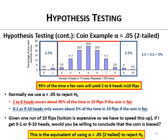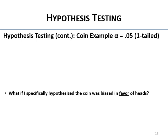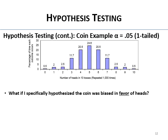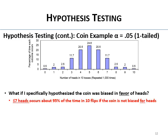How about alpha 0.05 one-tailed? My hypothesis would have to be different — I'd have to say this coin is biased in favor of heads. Here's that distribution. Getting fewer than eight heads occurs about 95% of the time in 10 flips for a coin that is not biased in favor of heads.